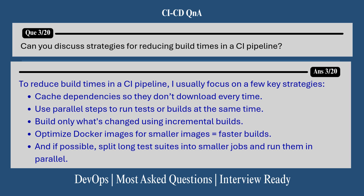Moving on to the next question about reducing build times. Can you discuss strategies for reducing build times in a CI pipeline? To reduce build times, I focus on a few key strategies: number one, cache dependencies so they don't download every time; number two, use parallel steps to run tests or builds simultaneously; number three, build only what's changed using incremental builds; number four, optimize Docker images for smaller size, which means faster builds; and number five, split long test suites into smaller jobs and run them in parallel.